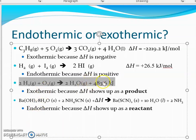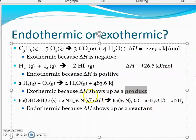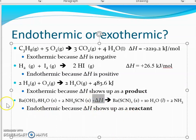If heat appears as a product, that means energy is being released — it's exothermic, and it should warm up the surroundings. If it's endothermic, heat appears as a reactant, meaning I had to put energy in to push the reaction uphill. Endothermic and exothermic concepts are really fundamental to thermochemistry.